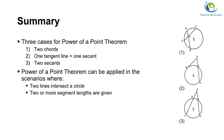There are three cases for the Power of a Point Theorem depending on how the lines intersect the circle: case 1 involves two chords, case 2 involves one tangent line and one secant, and case 3 involves two secants. The theorem can be used to solve geometry problems where two lines intersect a circle and two or more segment lengths are given.